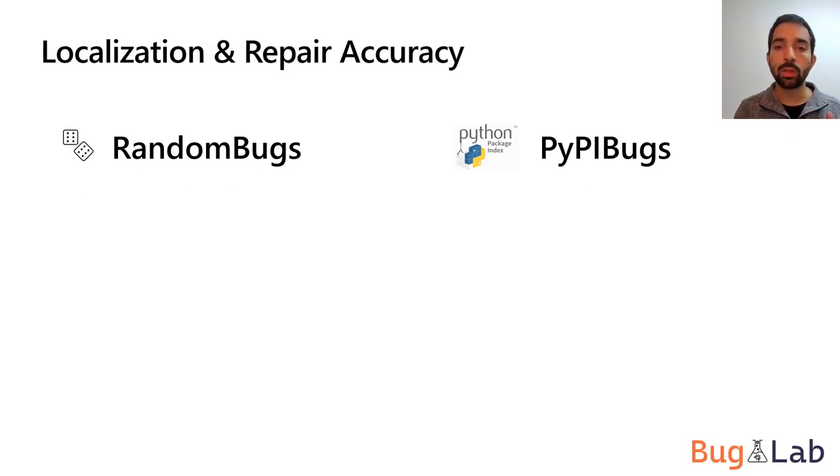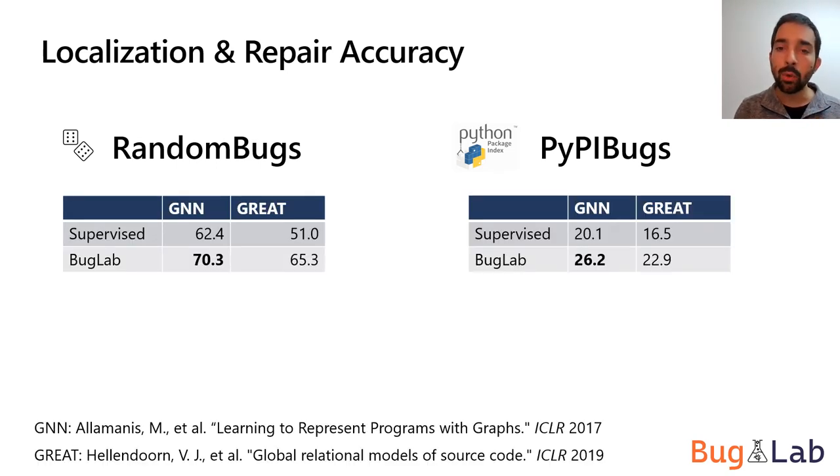We evaluate our models on both datasets. Our evaluations show that training models using BugLab improves the performance over simple supervised learning on random bugs.